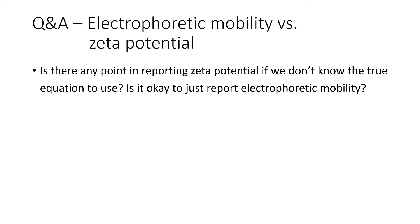Question: is there any point in reporting zeta potential if we don't know the true equation to use? Is it okay to just report electrophoretic mobility? Firstly, the instrument measures electrophoretic mobility and anything else it reports — zeta potential — is derived from it. So you aren't going to lose anything by doing so, and it is more appropriate to use it as raw data than zeta potential, because of all the problems I've described about calculating zeta potential from the mobility.